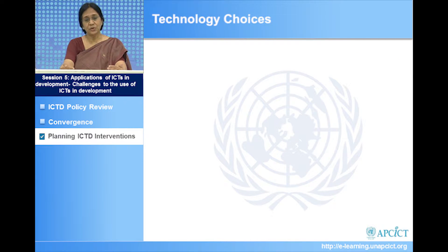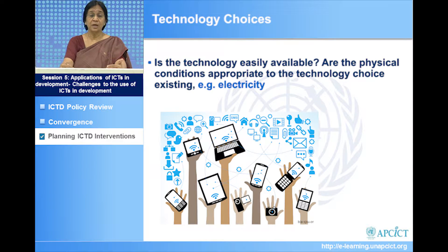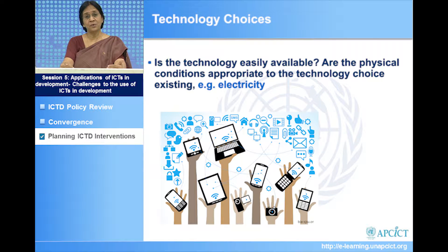When making technology choices, it is not just about what is most recent or supply-driven. We have to look at whether the technology is easily available and whether the physical conditions appropriate to technology choices exist. For example, what is the point of putting a common service center if there is no electricity in the village? If there is no electricity, do we look for a solar hybrid power station, generators, or UPS and battery backups? We must ensure the conditions for technology to work are present before we deploy it.